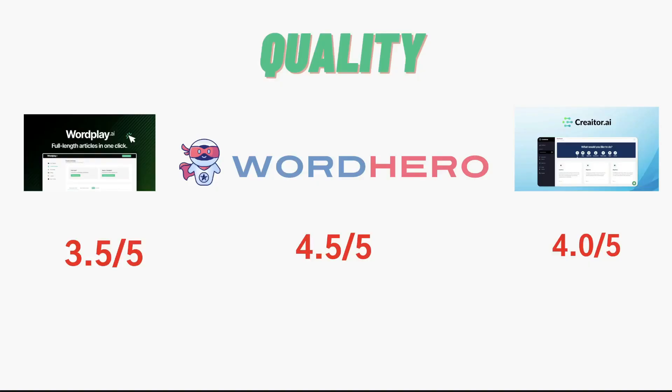I'd give Wordplay a score of 3.5 out of five for quality — sometimes it's really, really good content, but sometimes it can be a little bit of a hit or miss. For WordHero, I'd give them a score of 4.5 out of five — this is some of the best quality content you can get and it's one of the most popular AI copywriters in the market. For Creator.ai, even though it's a fairly new AI copywriter, it looks very promising — you're able to generate a lot of content with their long-form editor and the quality is pretty good, so I'd give it a score of 4.0 out of five.